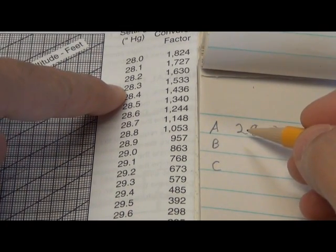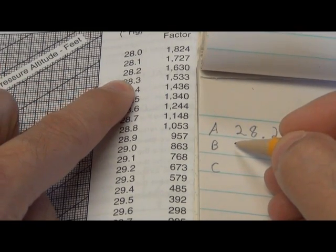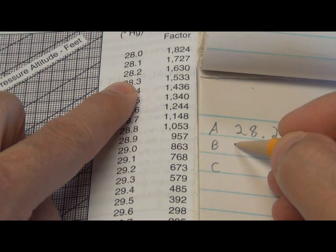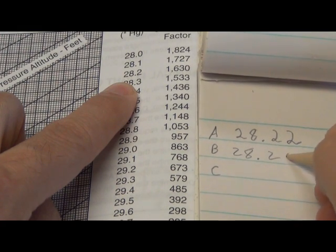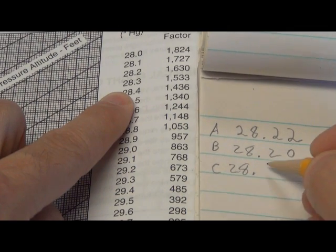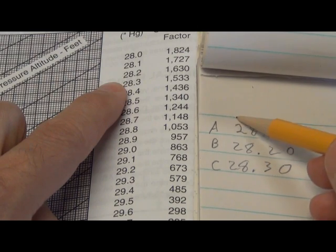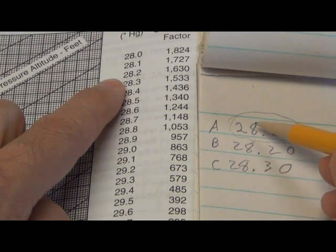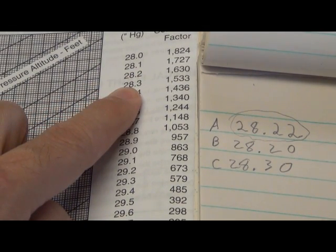You're creating a little table here on the right. The first number here is in the question, they give you the altimeter setting of 28.22. Down here, you're going to look at the chart and put on the number, look for the number that's the closest number to it, which is 28.20 and 28.30. In other words, you're going to find the two numbers that the number we're looking for falls between. So 28.22 falls between 28.2 and 28.3. Pretty simple so far.